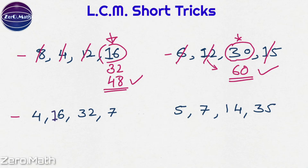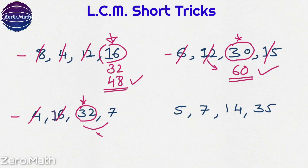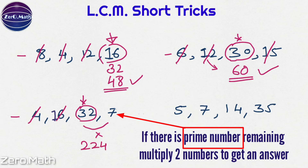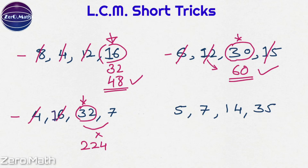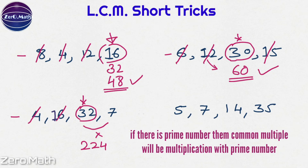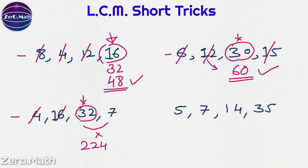Find the largest number from the given numbers — that is 32. It is completely divisible by 4 and 16, so cancel them out. Now we have two numbers remaining, and one of them is prime. In such a situation, we simply multiply these two numbers to get the answer: 32 × 7 = 224. The reason is the property of prime numbers: prime numbers are divisible only by 1 or the number itself. So there is no need to write the multiplication table — if there is a prime number, simply multiply the two numbers to get the LCM.